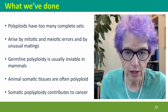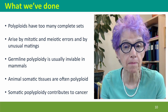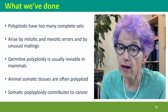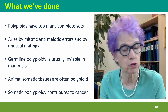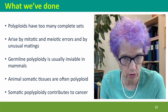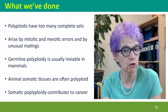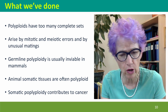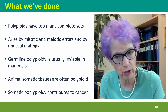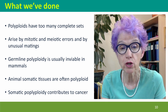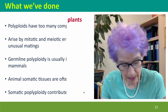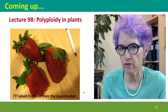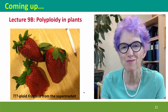So we've considered what polyploidies are: they have too many complete sets, but their sets are complete. They can arise by mitotic errors, meiotic errors, and by unusual matings where an egg is fertilized by two sperm. Germline polyploidy is usually inviable in mammals, but many of our somatic tissues are highly polyploid, and somatic polyploidy makes significant contributions to cancer. Coming up next, we're going to talk about polyploidy in plants, including mega, mega strawberries. Hope to see you there.